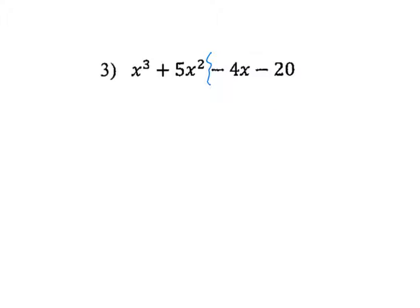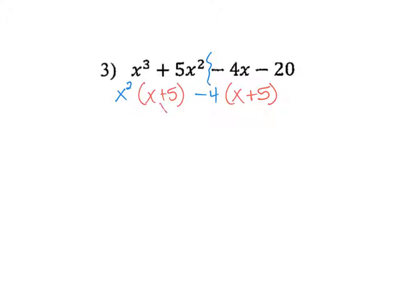Number three. First step: cut it in half. Factor the first two terms — x³ and 5x² — x² is in common. Factor out x², leaving x plus 5 in red. Now the second part: negative 4x minus 20 starts with a negative, so factor out negative 4. Negative 4 divided into negative 4x gives x, and negative 4 divided into negative 20 gives positive 5. My red parentheses match up, and my blues go together too. That's number three.